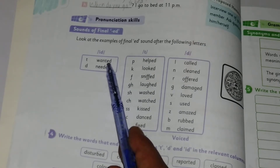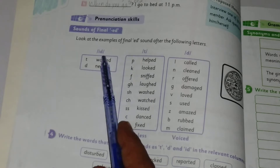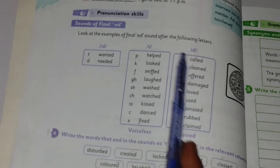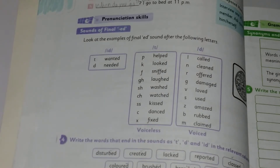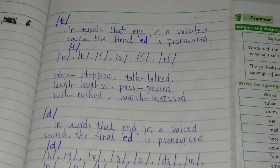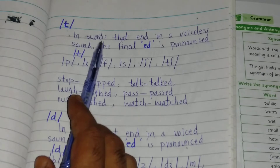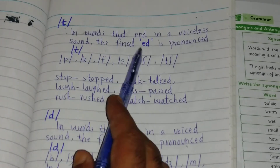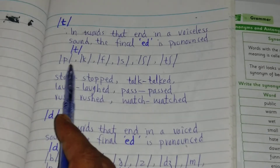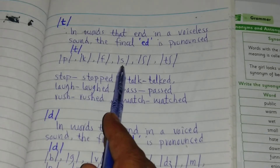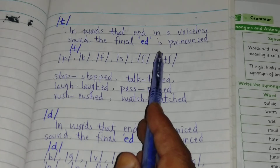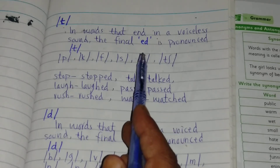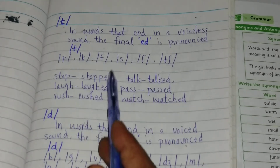So these letters have the 'id' sound, these letters have the 't' sound, and these letters have the 'd' sound. Now I'm going to explain the rules for these sounds. Listen carefully. For the 't' sound: in words that end in a voiceless sound, the final '-ed' is pronounced 't', like after 'p', 'k', 'f', 's'. If a word ends in a voiceless sound, the final '-ed' will be pronounced 't'.